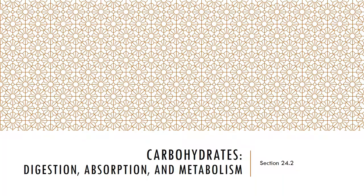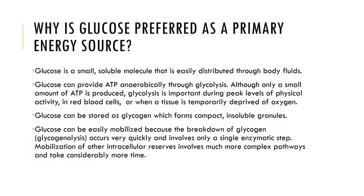Let's examine first how carbohydrates are digested, absorbed, and metabolized. Glucose is the preferred substrate for catabolism under resting conditions. Glucose catabolism is often referred to as cellular respiration and occurs in a three-step process: glycolysis, the citric acid cycle (also known as the Krebs cycle), and the electron transport chain.